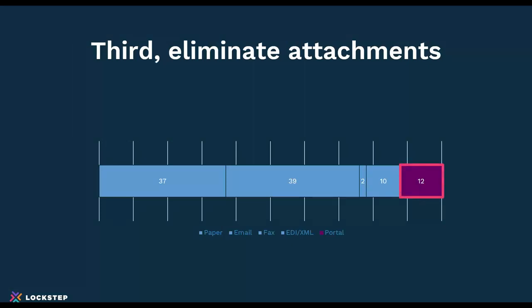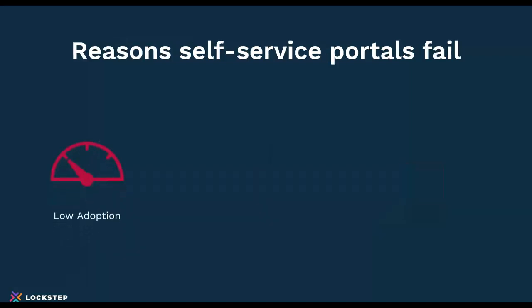Looking at the third element — eliminating attachments. In one study, only 12% of invoices are actually processed through a portal. That's a pretty low percentage. The question is how can you drive more self-service? How can you get more payments done online? The reasons self-service portals fail: one of the big factors is nobody really wants another password. When you're using portals, there's often low adoption because it's extra work for your trading partner. Your customers see it as harder to do than email itself.